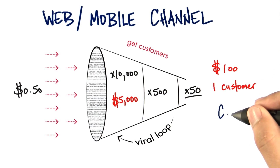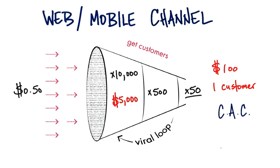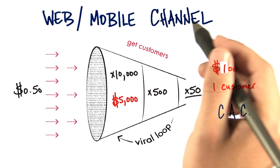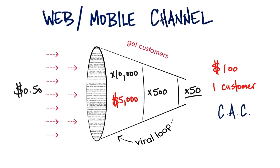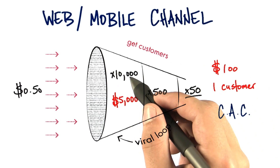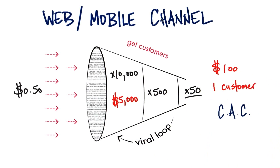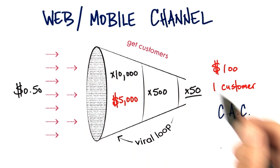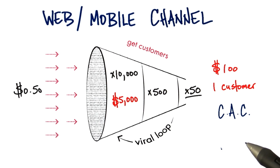That $100 equals my customer acquisition cost. I use this example for a web/mobile channel, but it's similar for a physical channel. You might not be doing pay per click — you might be doing direct mail math, or television or radio math. But the math works the same. How much did it cost to acquire a customer? How much did the campaign cost? How much did it cost to get them to consider your product, take a test drive of your car, or fly your airline? And in the end, what was your customer acquisition cost? That's a key number for any founder thinking about a startup.